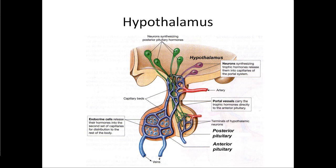This is really important for the connection between our nervous control system and our hormonal control system, which we'll start learning about next semester. But it is also a point of danger — it is a common way that infections get access to the brain. In fact, HIV forms a reservoir in the brain, and it is suspected that this is how HIV gets into the brain.